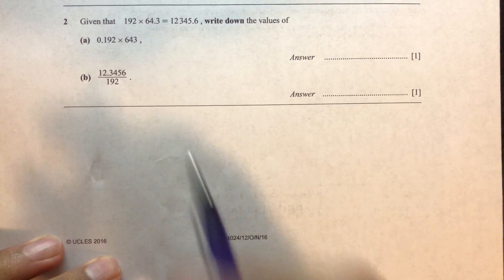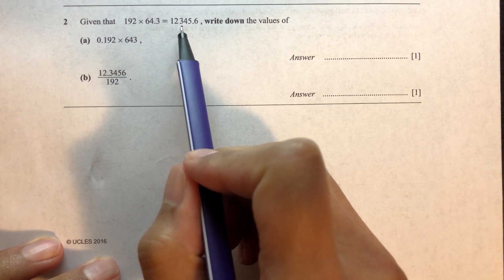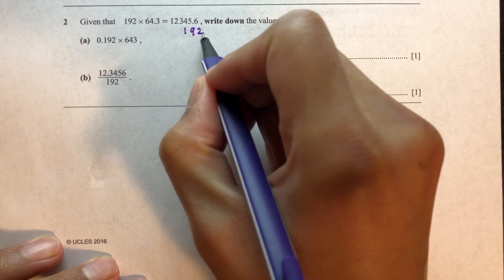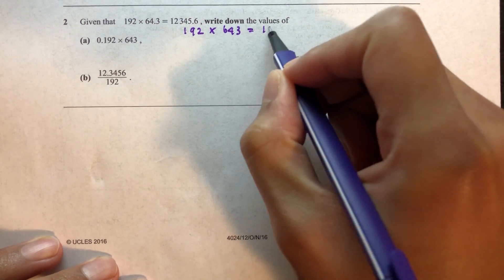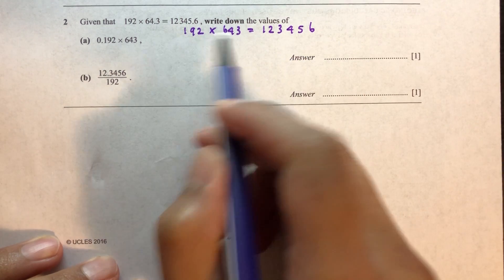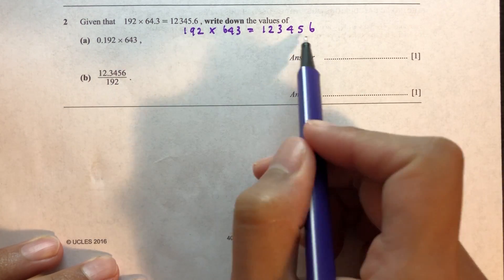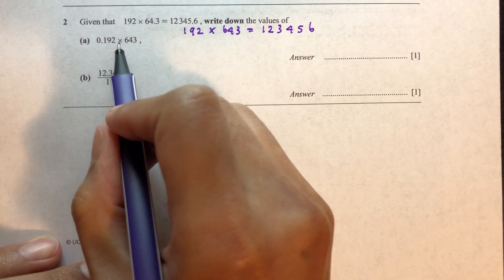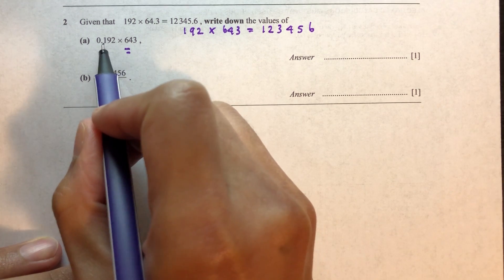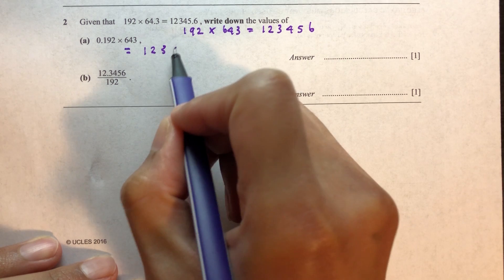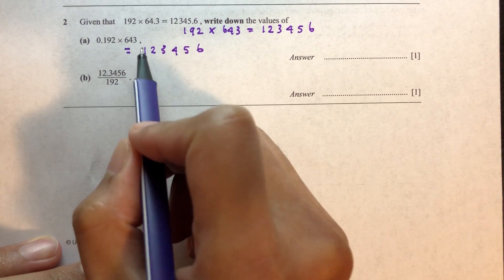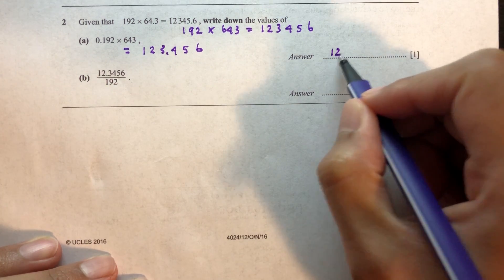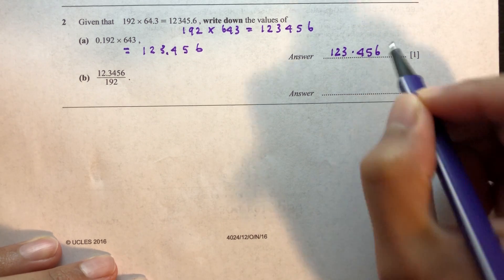Question number 2. Given that 192 times 64.3 is 12345.6, we can derive that 192 times 643 is 123456. Now we have to solve 0.192 times 643. We first multiply 192 times 643 to get 123456. Since 0.192 has three decimal places, the answer is 123.456.